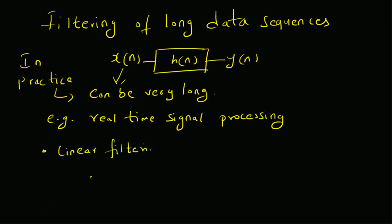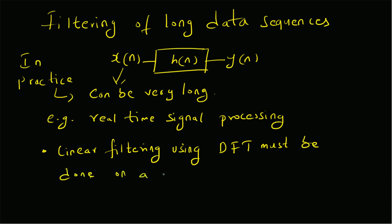Because of this reason, we are talking about linear filtering using DFT — that is, we can do this operation in the frequency domain by applying the DFT method. Linear filtering using the DFT method must be applied on a finite-length block of input data. So even though x(n) is very long, we consider small chunks of x(n), apply linear filtering, get a small chunk of the output, and then combine all the smaller outputs into the larger output.